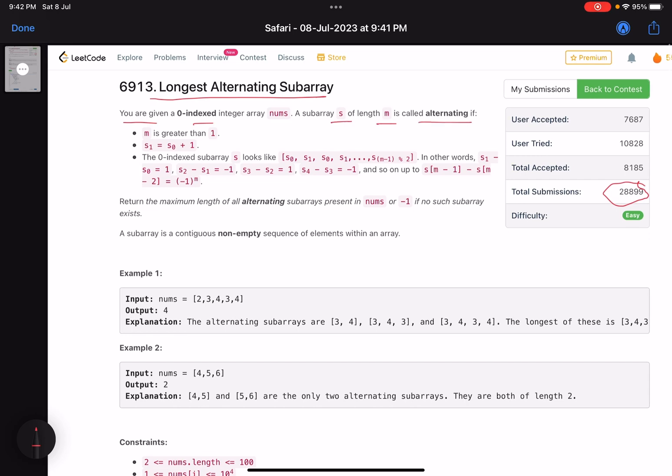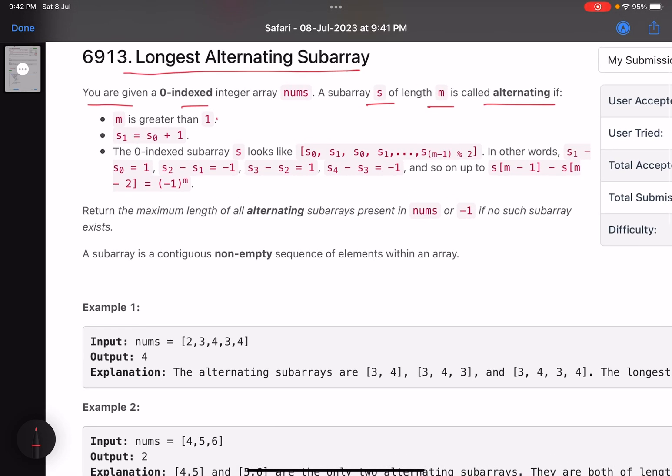This is one of the conditions which if you do not take care, you'll get wrong answer. Also s1 equals s0 plus 1. The zero-indexed subarray s looks like s0, then s1, then again s0, then again s1, and so on. In other words, s1 minus s0 is 1, s2 minus s1 equals minus 1, and so on - alternating.